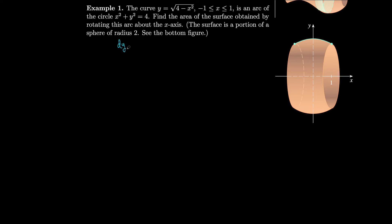To find the surface area, we need 1 plus the derivative squared and take the square root. So let's get the derivative: dy/dx is equal to one-half of (4 − x²) to the −1/2 times the derivative of the inside, −2x, by the chain rule. Simplifying, we get −x over the square root of 4 − x².